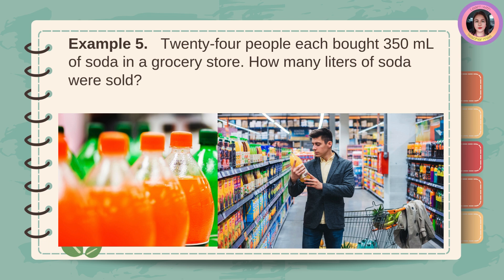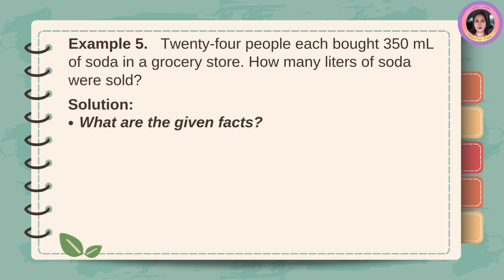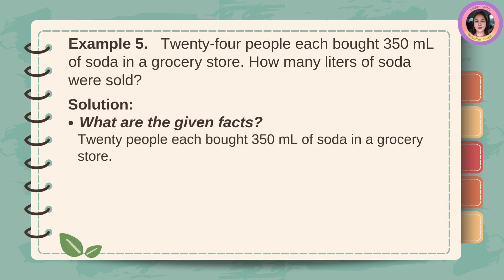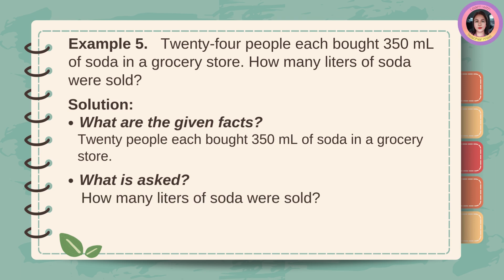Example number five: 24 people each bought 350 milliliters of soda in a grocery store. How many liters of soda were sold? Given facts: 20 people each bought 350 milliliters of soda in a grocery store. What is asked? How many liters of soda were sold?